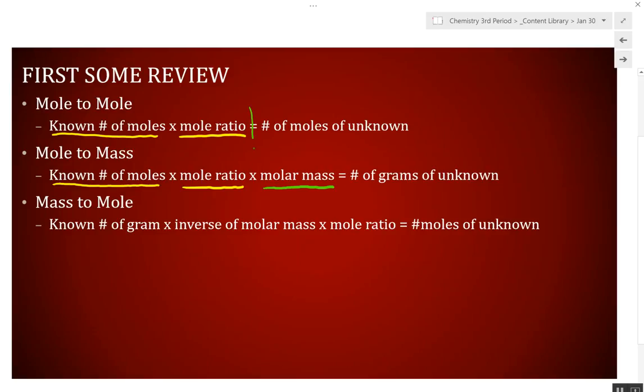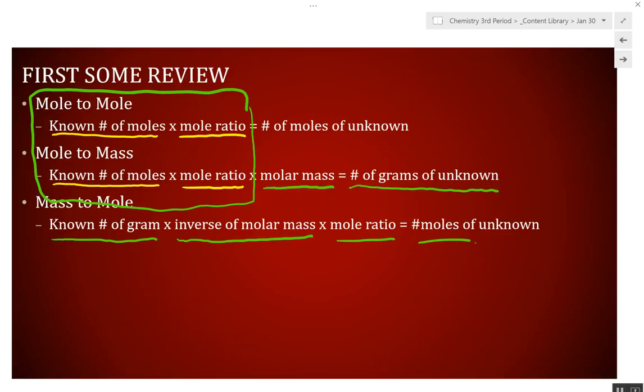Right here, you have your mole-to-mole. We've extended it now to add molar mass, and that gives you grams of unknown. And then finally, mass-to-mole. We're going backwards at this point. You start with the number of grams you know, divide by or multiply by the inverse of the molar mass times the mole ratio. Puts us at moles. But what we're going to do today is put it all together. And I will upload this PowerPoint to the agenda folder.